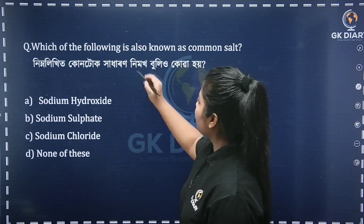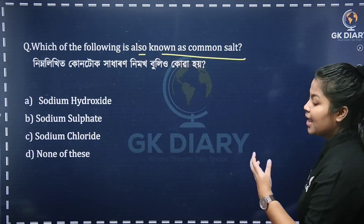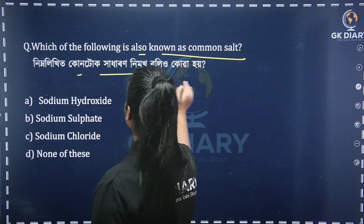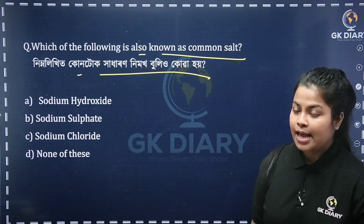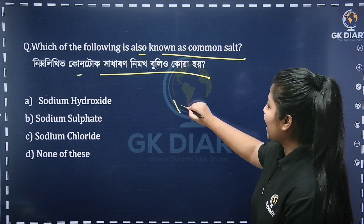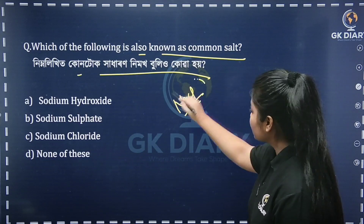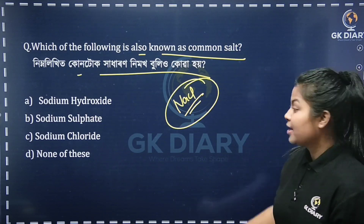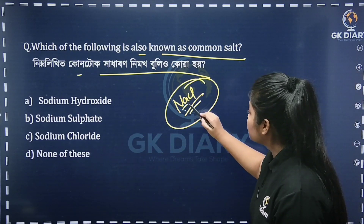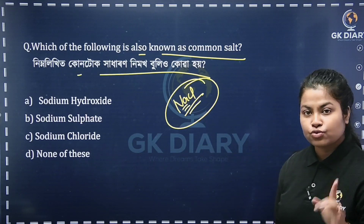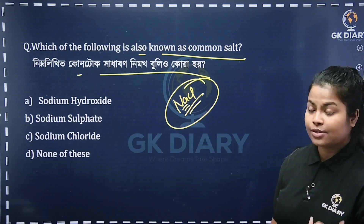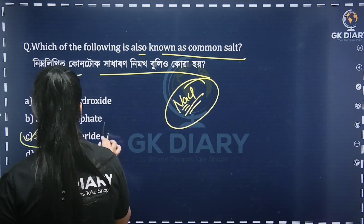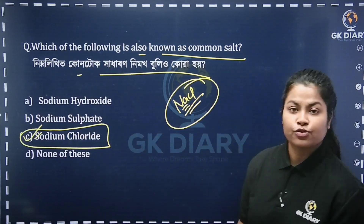Next question: which of the following is also known as common salt? You can use it normally — NaCl. Sodium is Na. What is Cl? Sodium chloride is the correct answer, Option C. So you need to use sodium chloride.